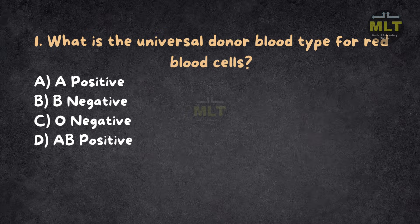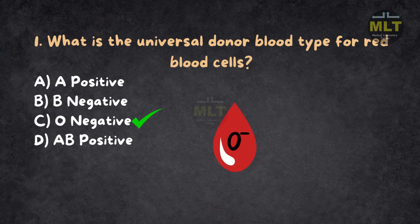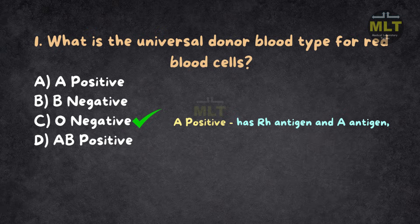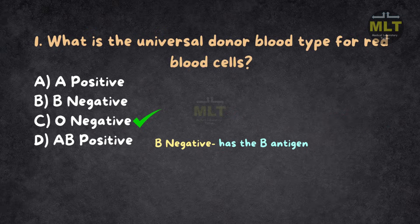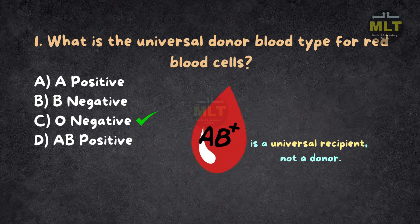Correct answer: C, O negative. O negative blood is the universal donor because it lacks A, B, and RH antigens, making it compatible with any blood type in emergency situations. A positive has the RH antigen and A antigen, so it's not universal. B negative has the B antigen and is RH negative — not universal. AB positive is a universal recipient, not a donor.